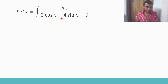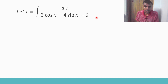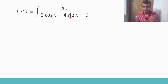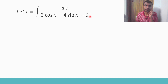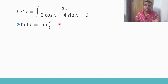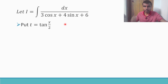First step: take the given integral as I, so I equals this integral. Now we are going to make a substitution. Whenever in the denominator there is a linear combination of sine and cosine like this, what we do is we put t equal to tan(x/2).